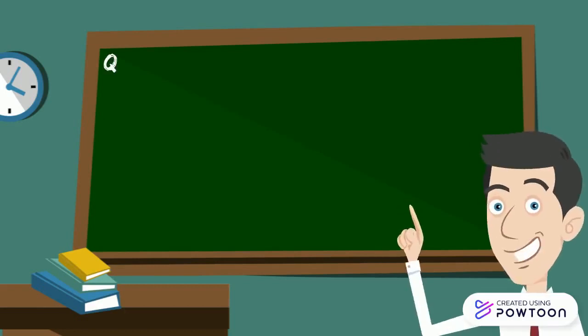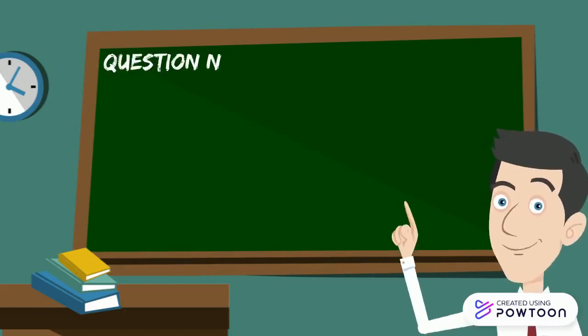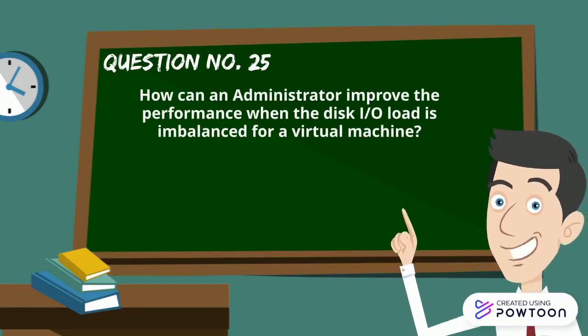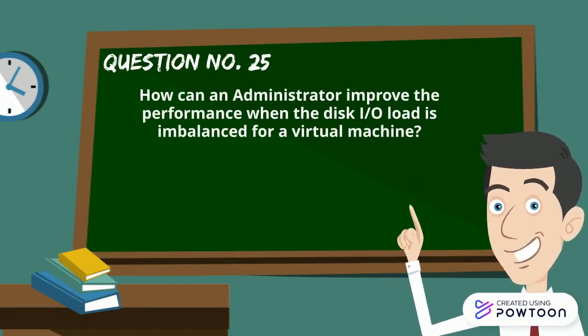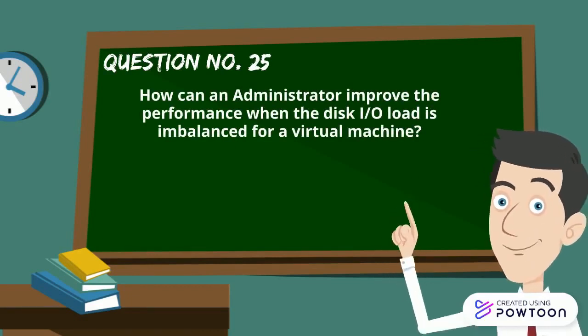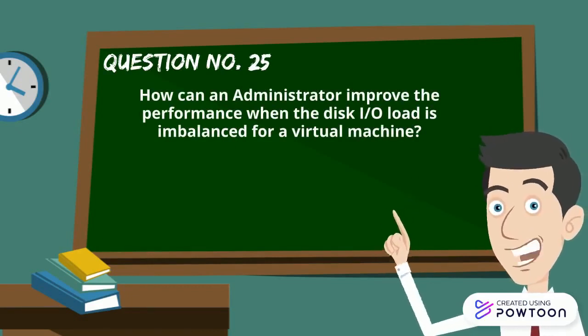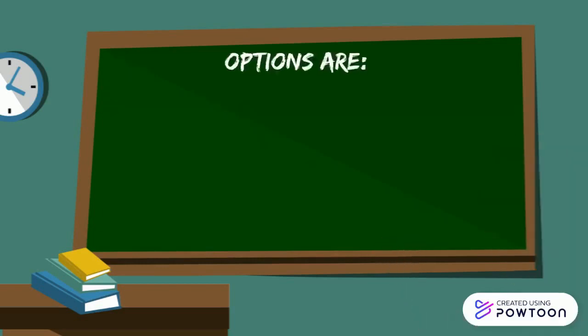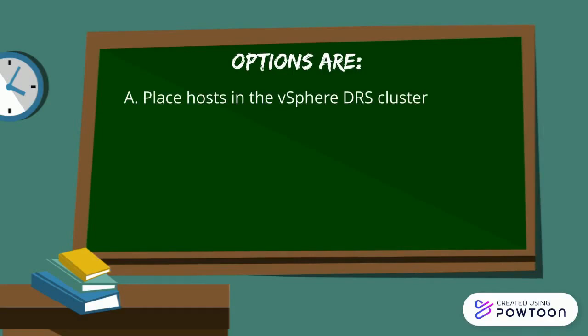Now here is question number 25 for you. How can an administrator improve the performance when the disk IO load is imbalanced for a virtual machine? Your options are: A. Place host in the vSphere DRS cluster.